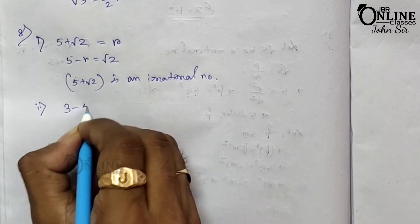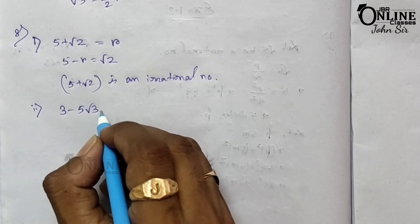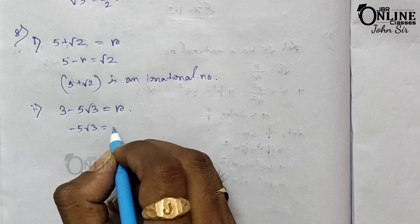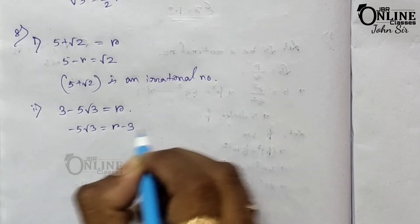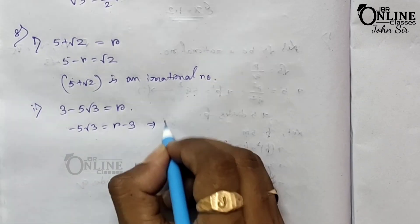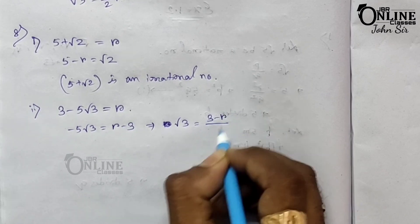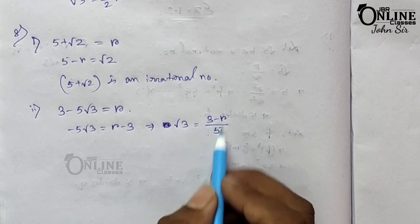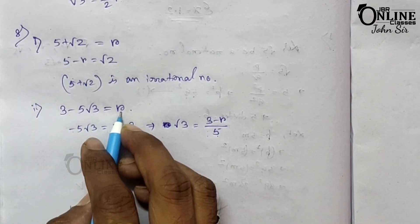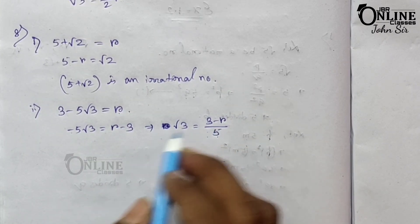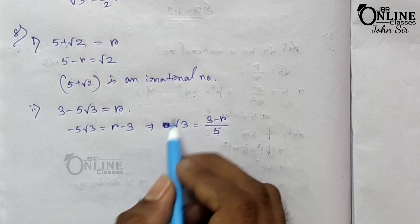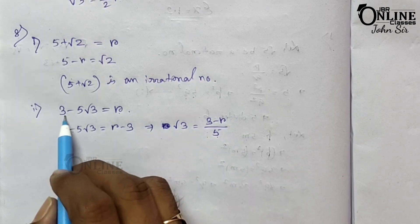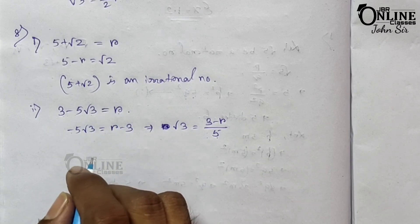Problem 8.2: prove that 3−5√3 is an irrational number. Assume 3−5√3 is rational and equals r. Then −5√3 = r−3, so √3 = (3−r)/5. Since r is rational, (3−r)/5 is also rational, meaning √3 is rational. But this contradicts the fact that √3 is irrational. So 3−5√3 is an irrational number.